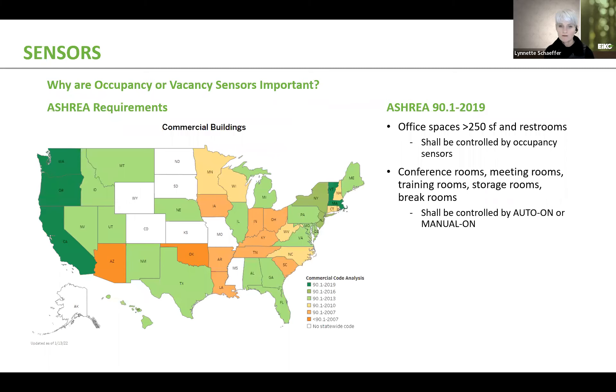So why are occupancy sensors and vacancy sensors important? Same exact thing, energy savings, energy savings number one, but also to meet the local codes for ASHRAE and even local codes that you may have in your own area as well. And a lot of them, this 2019 ASHRAE code specifically says that office space less than 250 square feet and restrooms shall be controlled by occupancy sensors. Also conference rooms, meeting rooms, training rooms, storage rooms, break rooms shall be controlled with auto on or manual on from an occupancy standpoint or vacancy standpoint.